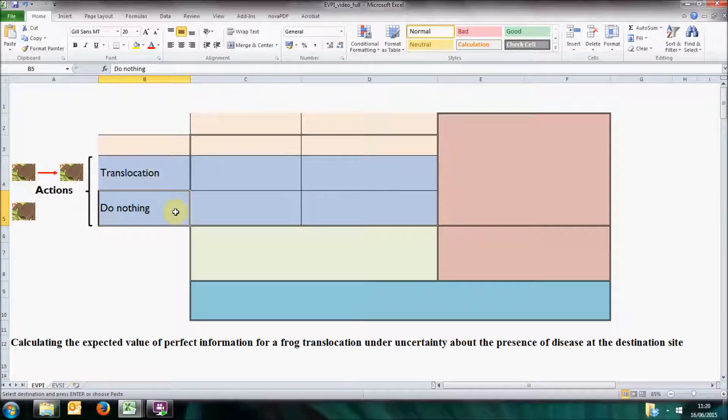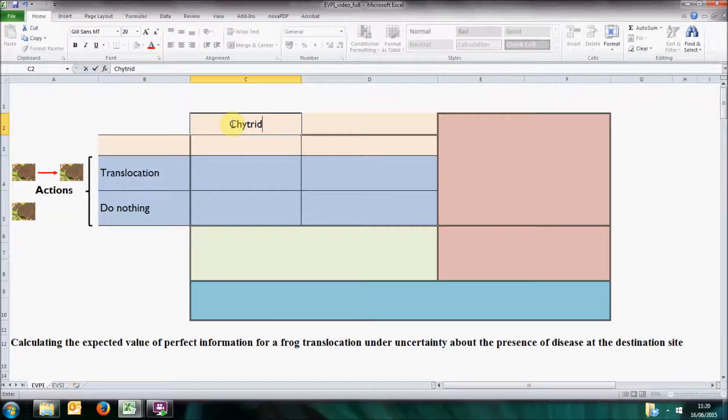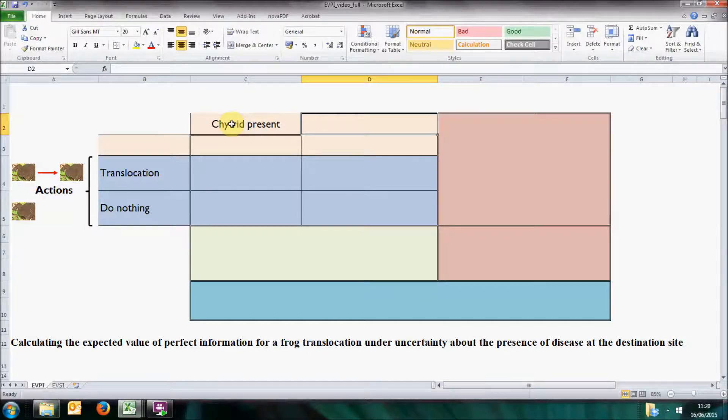However, we are uncertain about the presence of chytrid fungus at the destination site. So the next step is to articulate this uncertainty into a set of plausible hypotheses. In this case, chytrid may be present at the new site, or it may be absent from the new site.